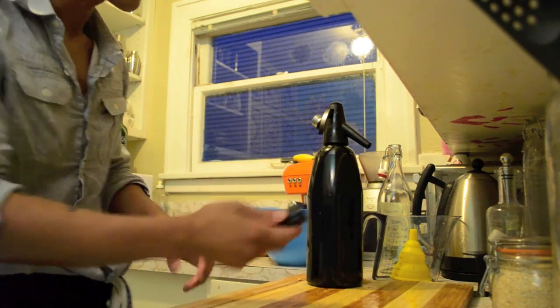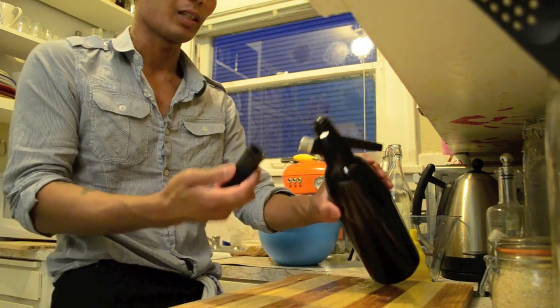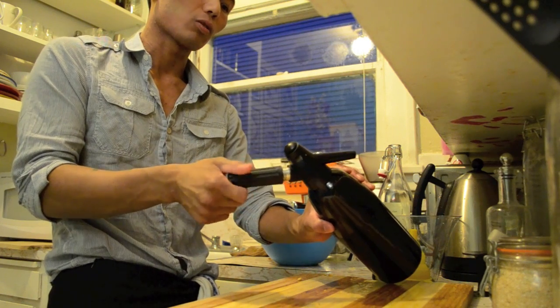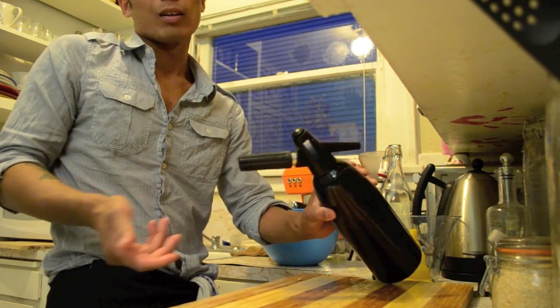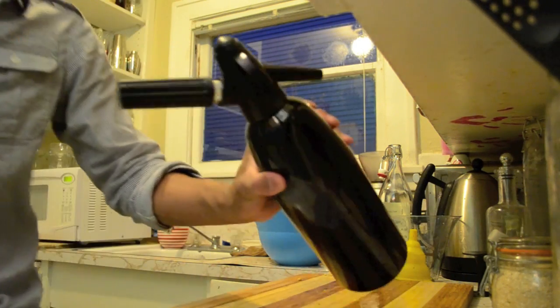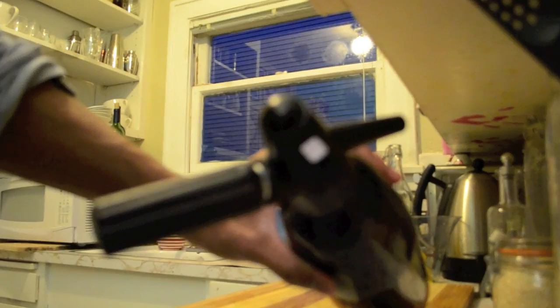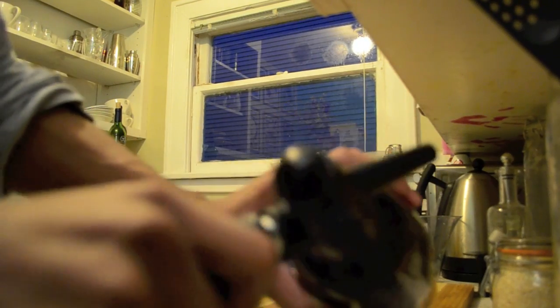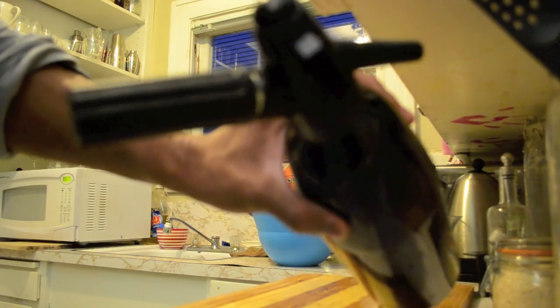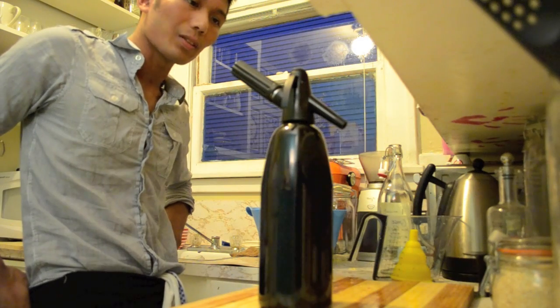Now this is the fun part. Take your 8 gram CO2 cartridge, stick it in the holder right there, just screw it on. You'll say hey, when will I know when it's carbonated? Well let me show you. Screw it on there and just listen. That's how you know. Shake it once, refrigerate it, and you're done.